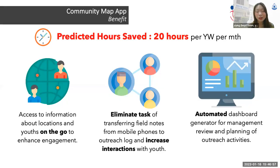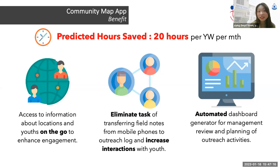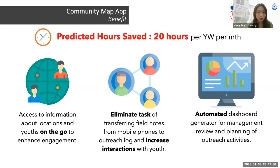The predicted hours saved when we launch will be 20 hours per youth worker per month. The app enables: accessing information about locations, spaces, and youth on the go for better engagement; eliminating the extra task of transferring field notes and inputting information directly into the app in real time; increasing the quality of interactions between youth worker and youth; and an automated dashboard generator for planning and management review.